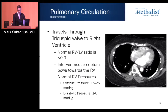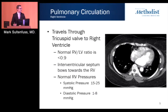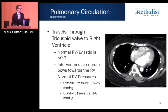Another anatomic finding to assess is the interventricular septum. It normally bows towards the right ventricle, but can be flattened or paradoxically bowed towards the left ventricle in the setting of increased right heart pressures. Normal right ventricular pressures are systolically 15 to 25 mmHg and diastolically about 1 to 8 mmHg.